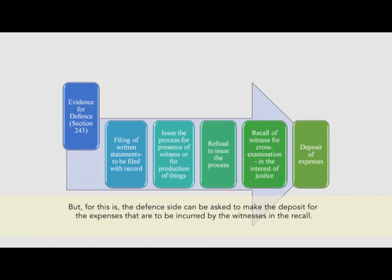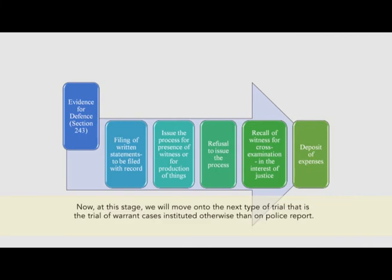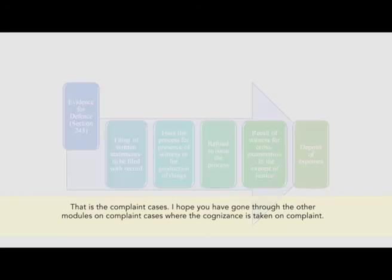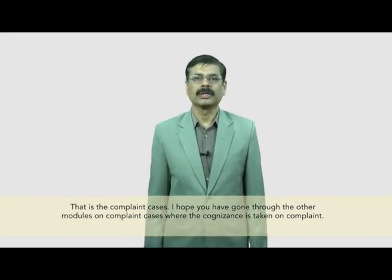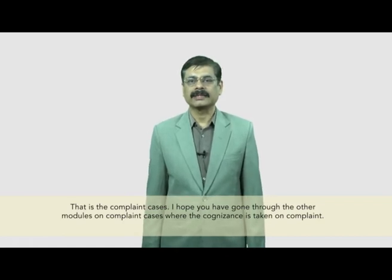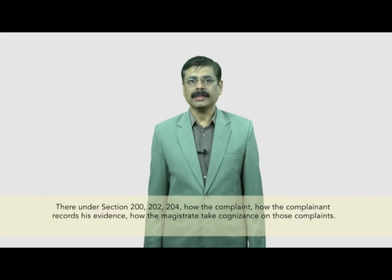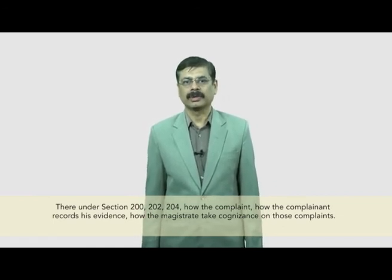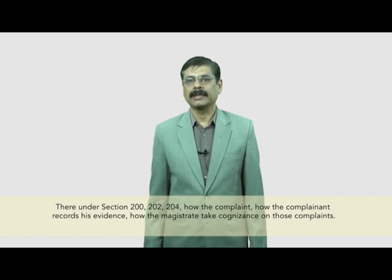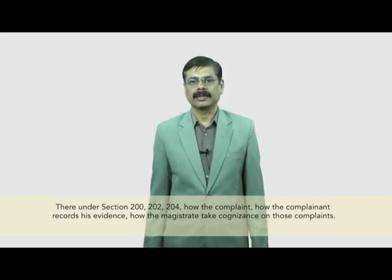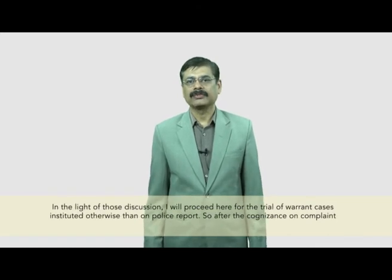We now move on to the next type of trial — the trial of warrant cases instituted otherwise than on police report, that is, the complaint cases. Having gone through the other modules on complaint cases covering sections 200, 202, and 204 — how the complainant records his evidence and how the magistrate takes cognizance on those complaints — we will now proceed for the trial of warrant cases instituted otherwise than on police report.